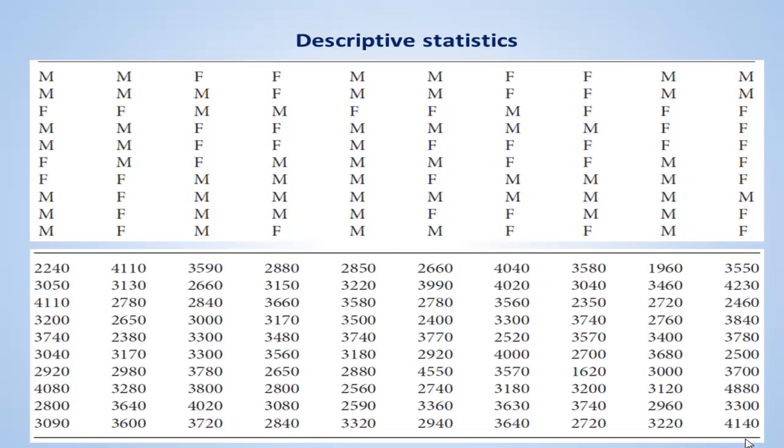Collectively, these methods are called descriptive statistics. These methods are a set of procedures that we can apply to raw data, so that its principal characteristics and the main features are revealed. This might include sorting the data by size, putting it into tables, presenting it as a chart, or summarizing it numerically.